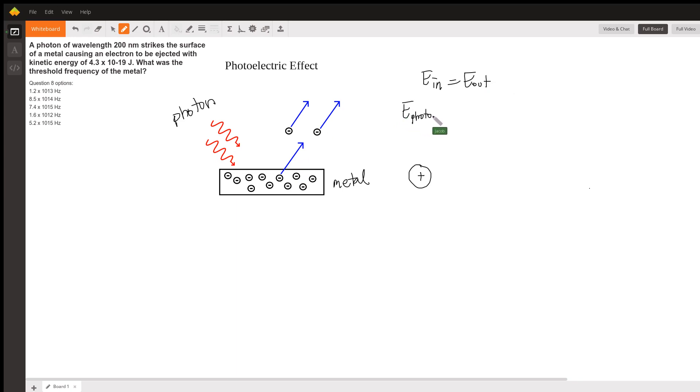The energy into this system is the energy of the photon. The energy that comes out is the kinetic energy of the electron, and we're actually given that, so that's really nice. In addition to the kinetic energy, some of that energy in is used to kick the electron off of a metal atom.